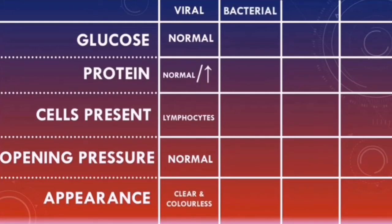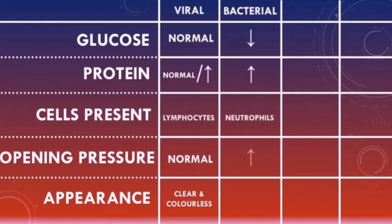In bacterial meningitis, the CSF glucose will typically be low and the CSF protein will typically be raised. The predominant cell type present will be the neutrophil, the opening pressure will typically be raised, and the CSF may look turbid.